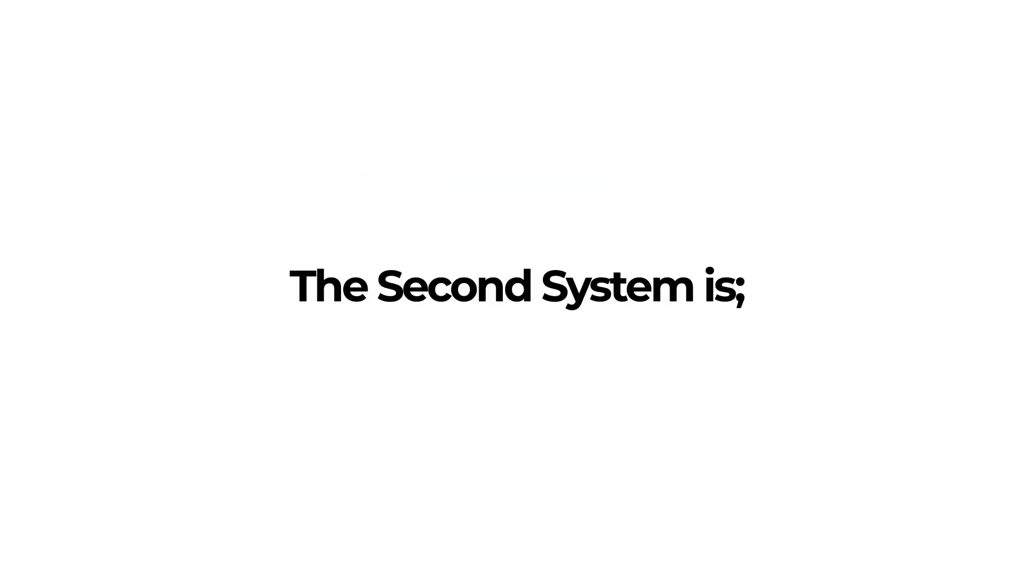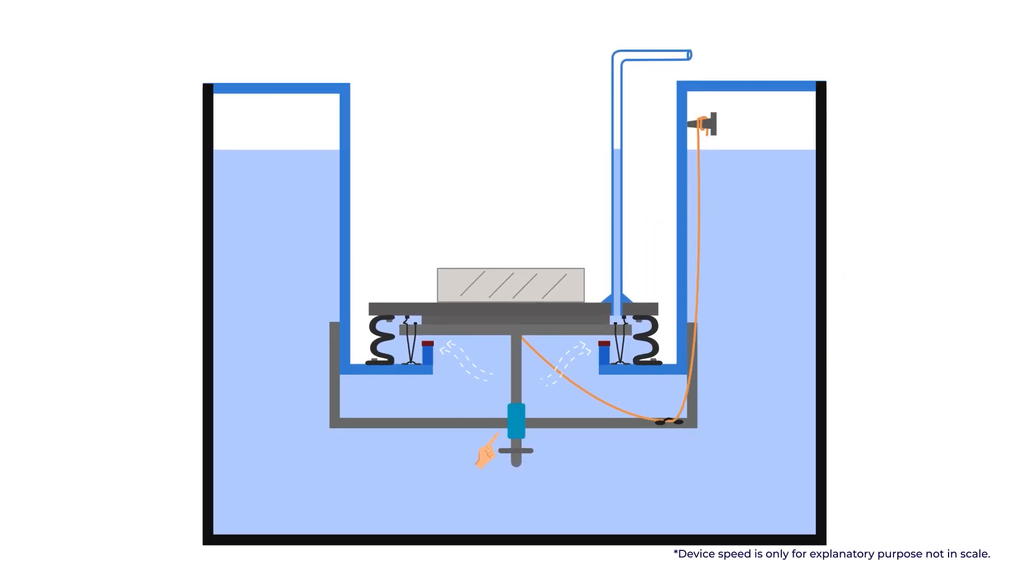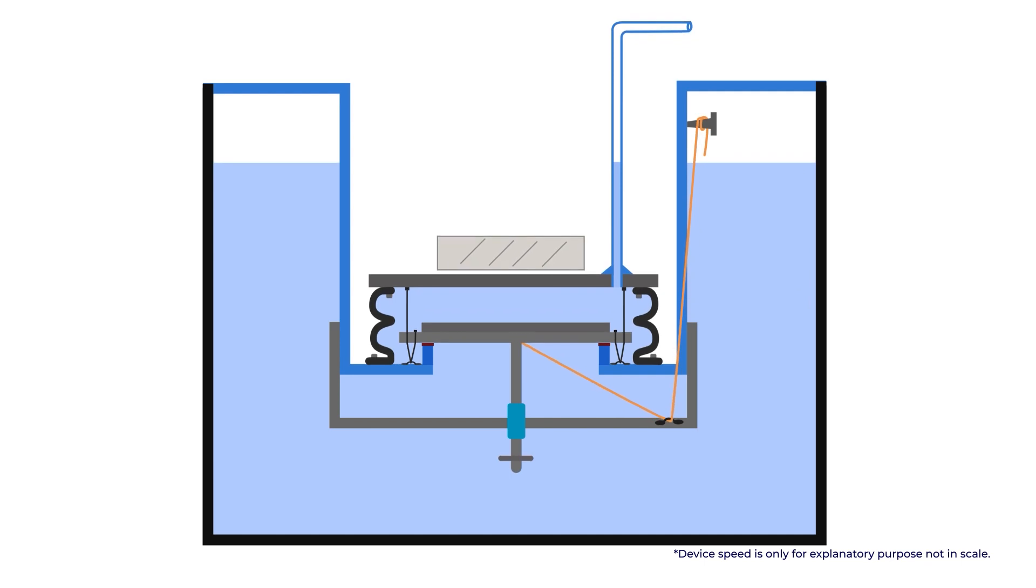The second system is floating valve system, which is using buoyant force to close intake valve so the incoming water won't get into the pressure chamber. The top plate is going up at the same time intake valve is closing due to the tension in the string caused by buoyant force as you see here.